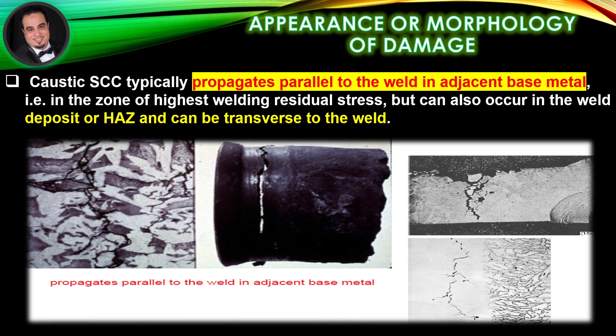Appearance or morphology of damage: As illustrated in figures, caustic stress corrosion cracking typically propagates parallel to the weld in adjacent base metal, for example in the zone of highest welding residual stress, but can also occur in the weld deposit or heat affected zone.